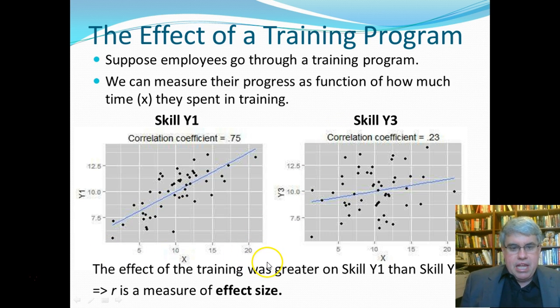The x-axis is how many hours they spend in training, and what we can see is that the first skill, politeness, is strongly correlated to how much time they spend in the training. Now the second skill, how much they actually help the person on the line, is slightly related to the time they spent in training but not nearly as strongly as the skill of being polite to the customer. We see that the correlation is 0.75 here versus 0.23 here.